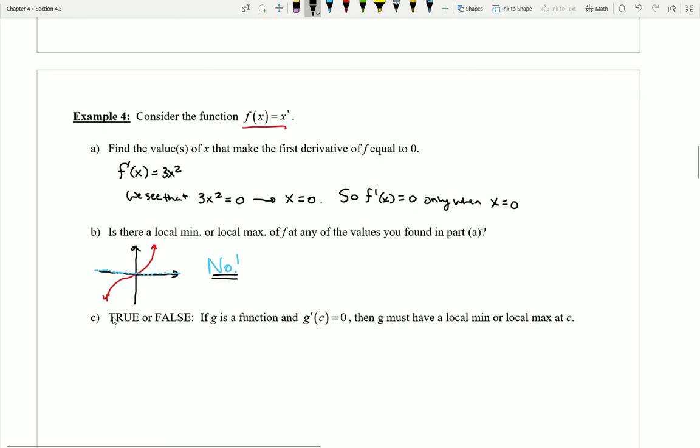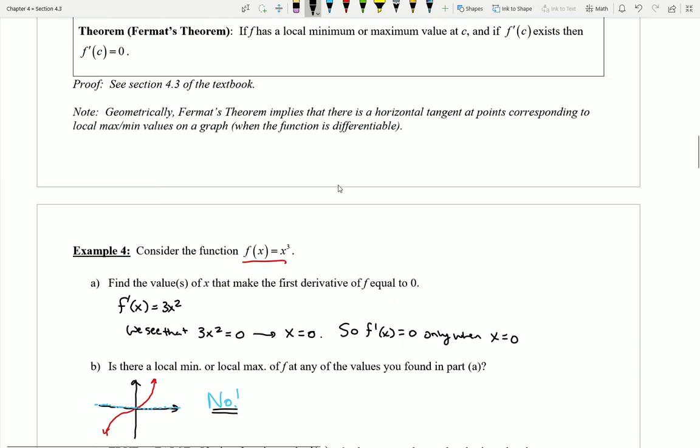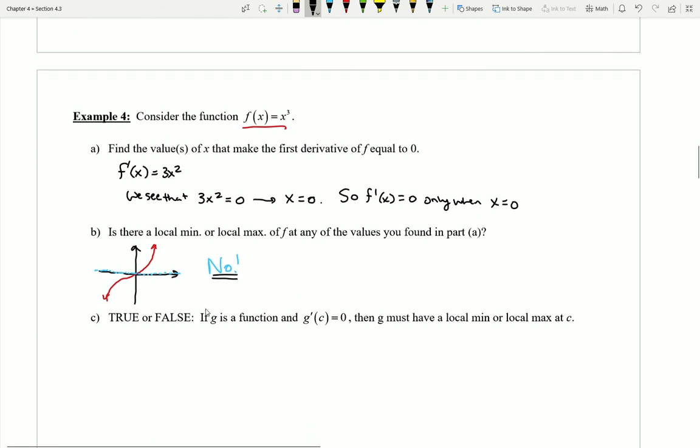So this leads us to our important Part C. You'll notice here it's almost the reversal of Fermat's theorem in terms of its sentence structure. Fermat's theorem started with the idea of local mins and maxes, and ended with the idea of our derivative equal to zero.